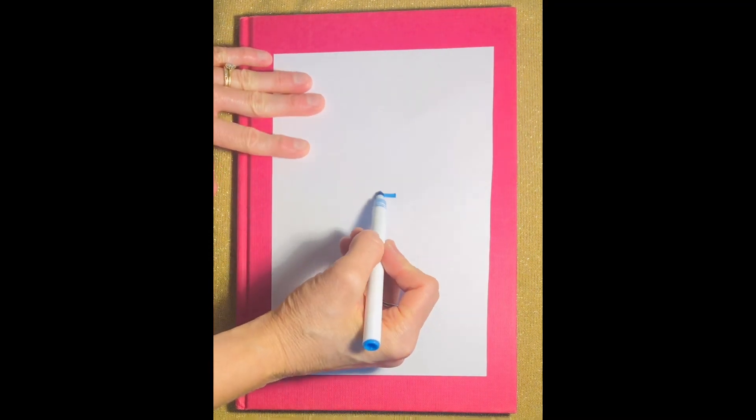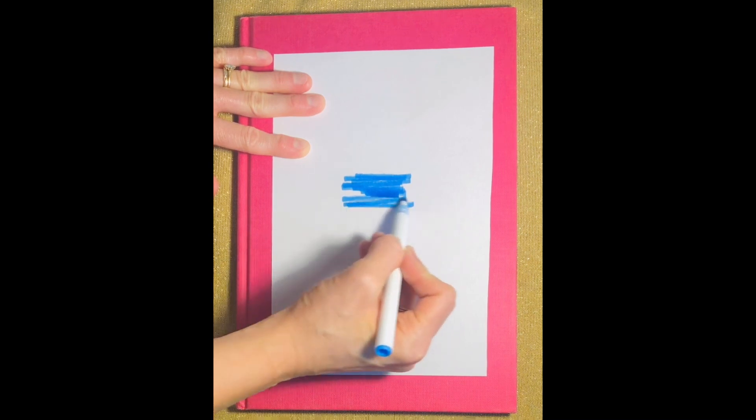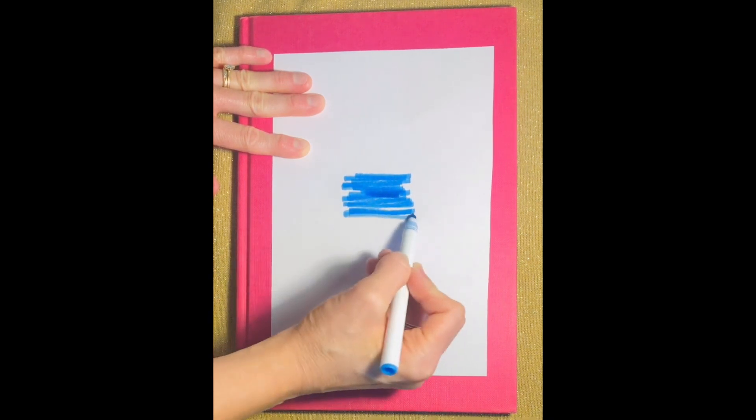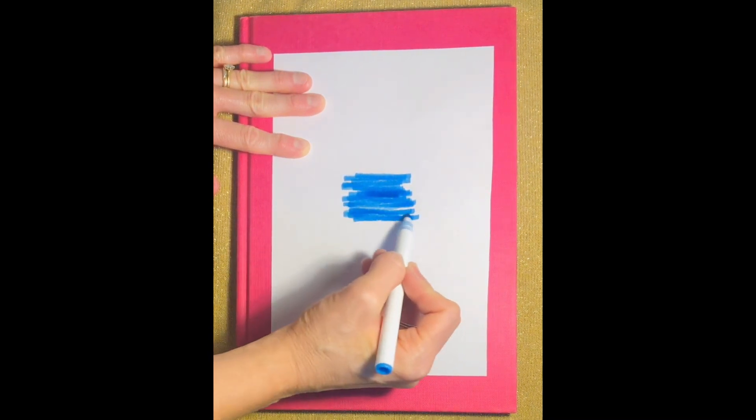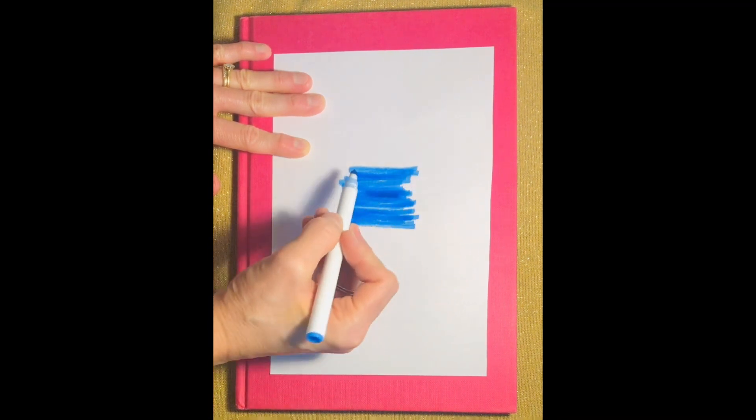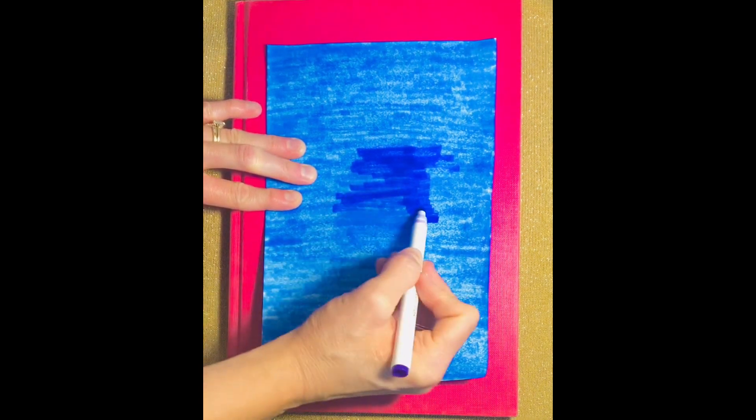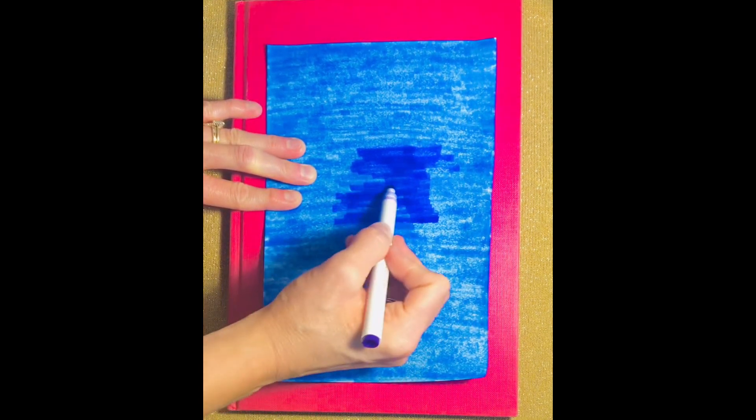Next, we are coloring our paper blue. Since we are out of construction paper, we thought this blue would be beautiful for our nighttime sky and now we are adding purple to our nighttime sky.